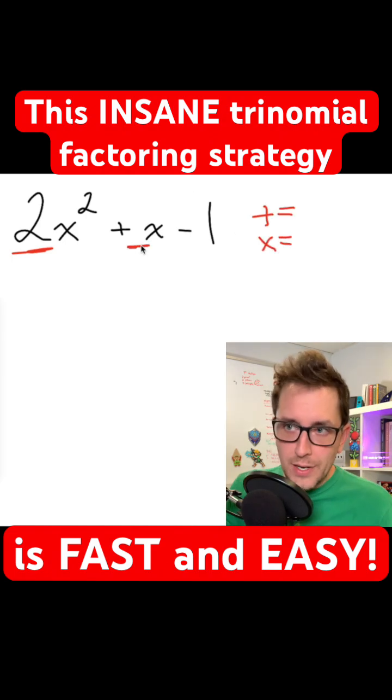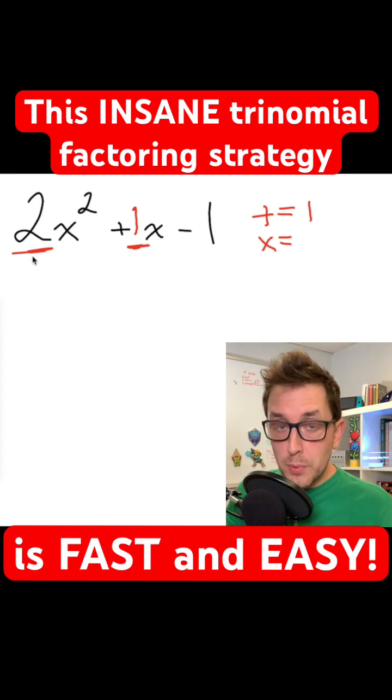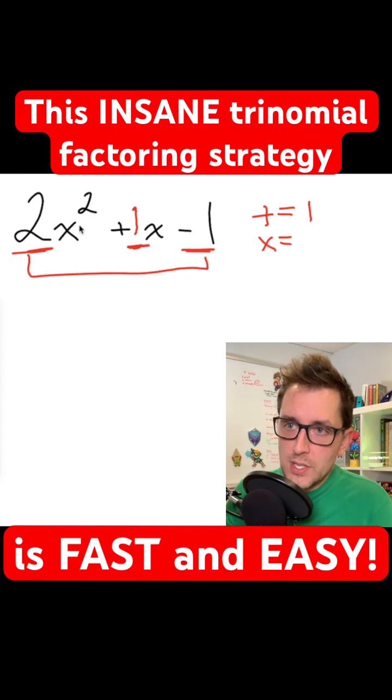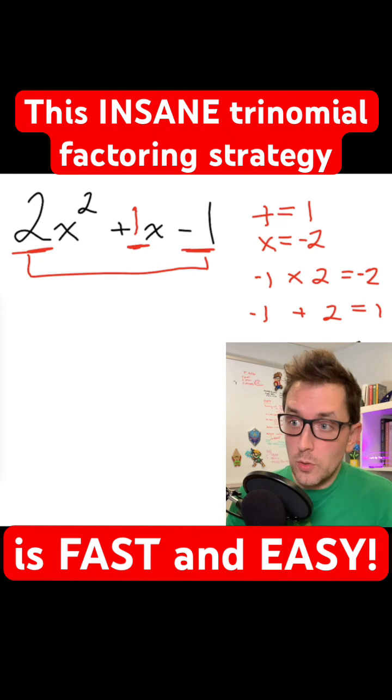Start by looking for two numbers that are gonna add to get our b value. But the two numbers we pick also have to multiply to get us the product of a and c, which is gonna be negative two in this case. So my two numbers have to be negative one and positive two.